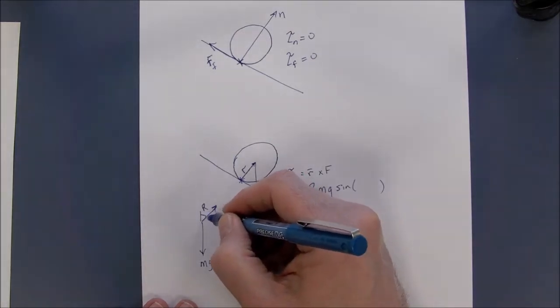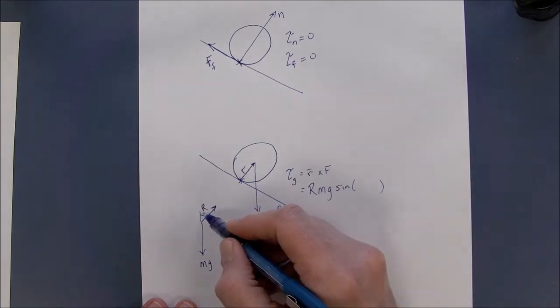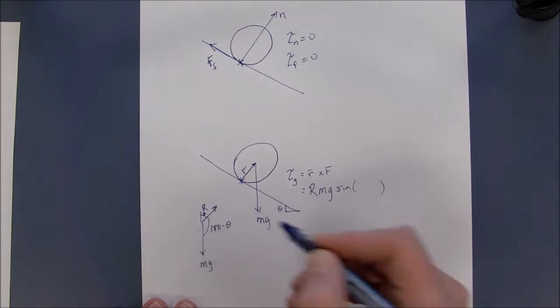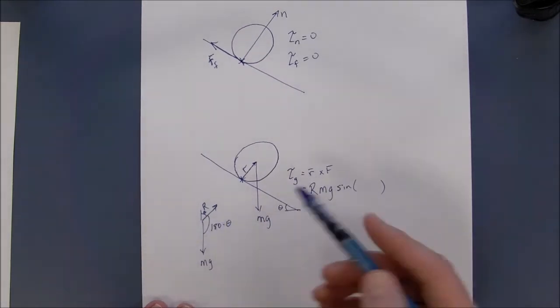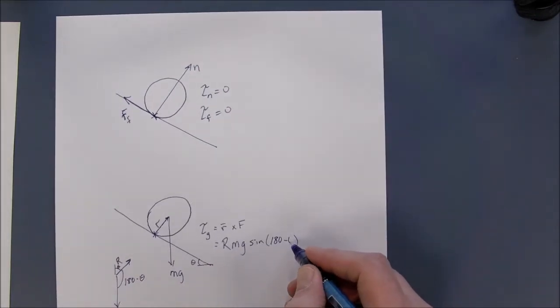This angle here is the same angle as the angle of the incline. So this angle is theta. So this guy is 180 minus theta. And that is the angle between R and mg.